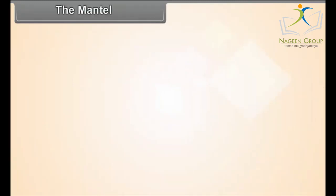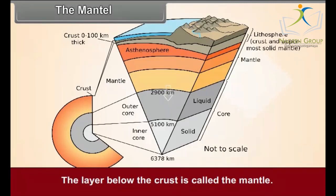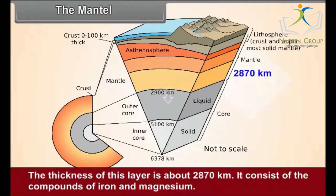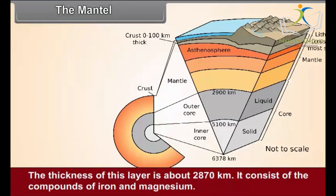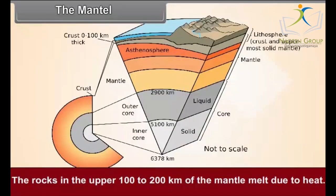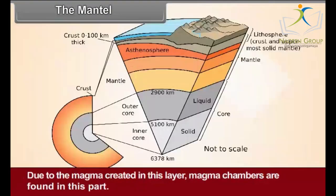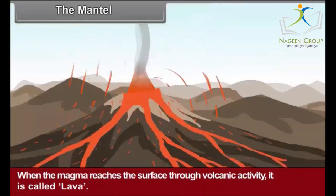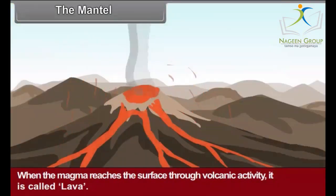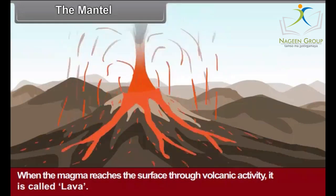The mantle. The layer below the crust is called the mantle. The thickness of this layer is about 2870 kilometers. It consists of the compounds of iron and magnesium. The rocks in the upper 100 to 200 kilometers of the mantle melt due to heat. Due to the magma created in this layer, magma chambers are formed. When the magma reaches the surface through volcanic activity, it is called lava.